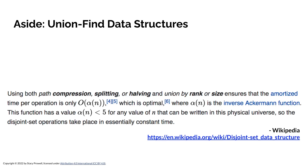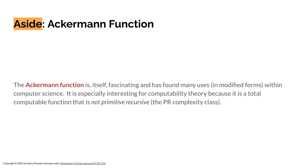The inverse Ackermann function is not a constant — it grows, but unbelievably slowly. It grows so slowly that the value doesn't even reach 5 for any value of n that can be written in the physical universe. So disjoint set operations take place in constant time for all practical purposes, but not really — that's another 'almost constant time,' which leads to another 'almost linear' claim. The inverse Ackermann function is fascinating; it shows up in complexity classes. It's one of the first computable functions that is not primitive recursive — that's the PR complexity class.